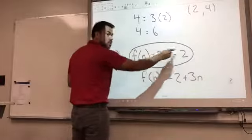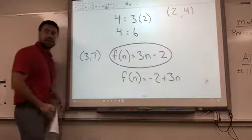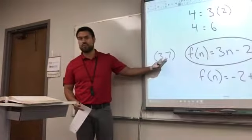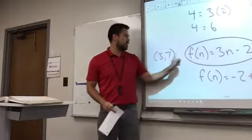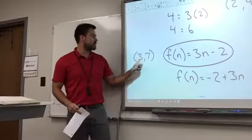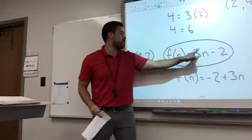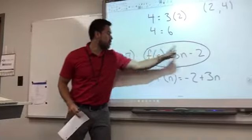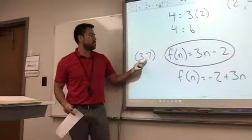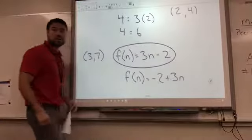Give me another ordered pair, Josh. 3, 7. All right. So if this is a true equation, this ordered pair has to fit, right? So let's see. f of n is 7, n is 3. So what's 3 times 3? 9. 9 minus 2? 7. So does that work? Yeah, all of them work. That's my equation. OK?